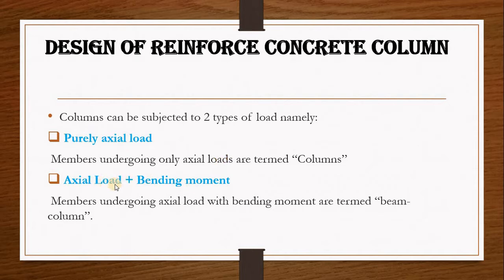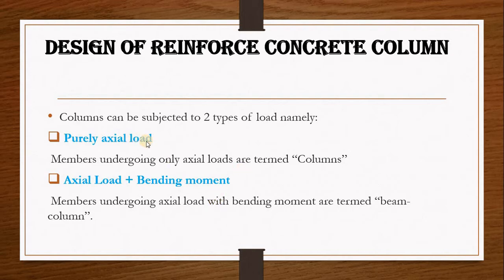The second type is when the column is experiencing both axial load with bending moments. We call these beam columns. This is basically when a column in a building is experiencing gravity load and also experiencing lateral load like wind load or earthquake load. The lateral load is going to produce a bending moment on the column, while the gravity load acts as axial load. So the two types of load a column can be subjected to are: purely axial load, and axial load combined with bending moments.